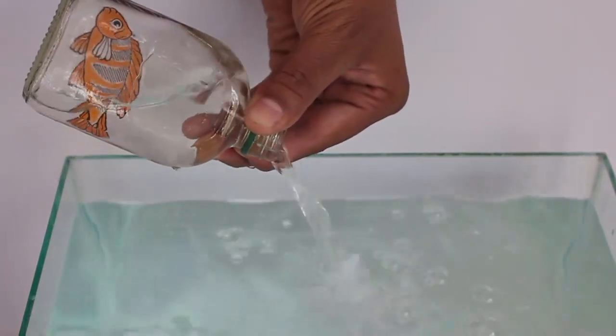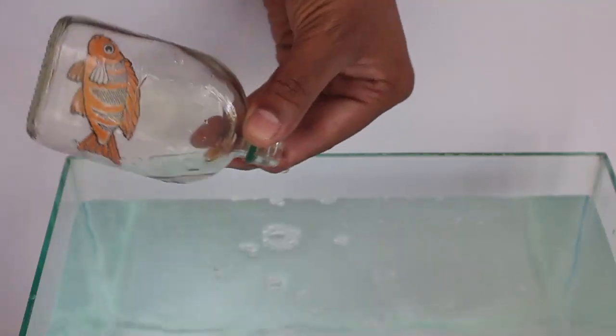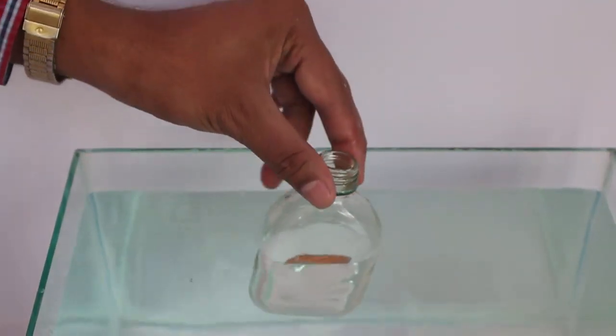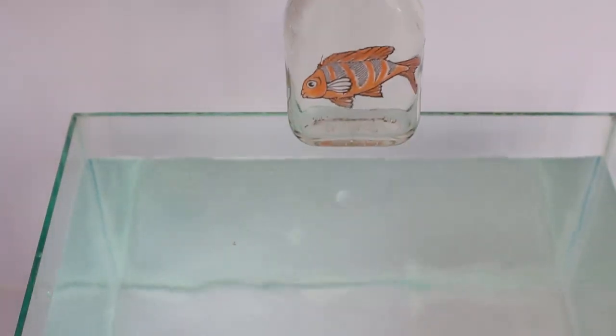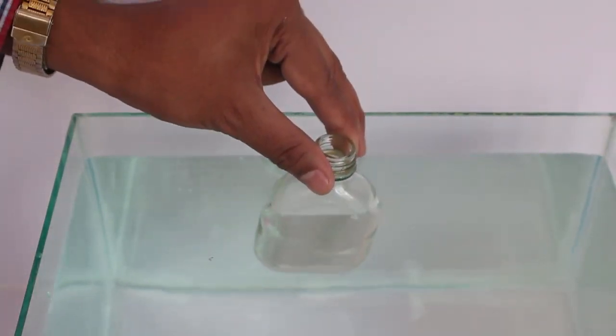Now remove the water from the bottle. Once again, if you dip the bottle with the air and the fish, the fish disappears.